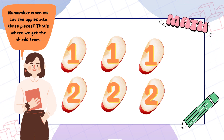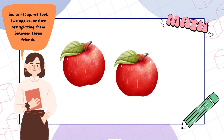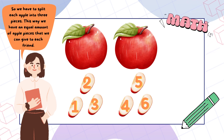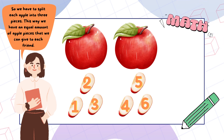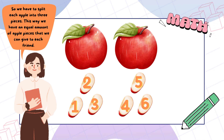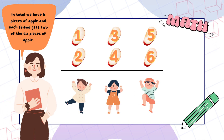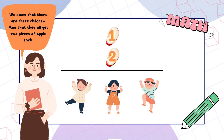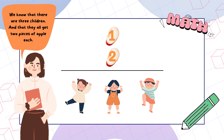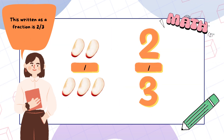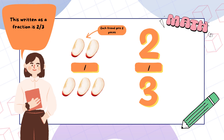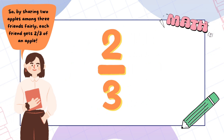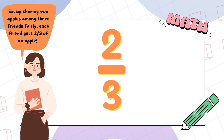Remember when we cut the apples into three pieces? That's where we get the thirds from. We took two apples and we are splitting them between three friends, so we have to split each apple into three pieces. We have an equal amount of apple pieces that we can give to each friend. In total, we have six pieces of apple, and each friend gets two of the six pieces. There are three children and they all get two pieces of apple each. This written as a fraction is two thirds. Each friend gets two pieces; each apple was cut into three pieces. So by sharing two apples among three friends fairly, each friend gets two thirds of an apple.